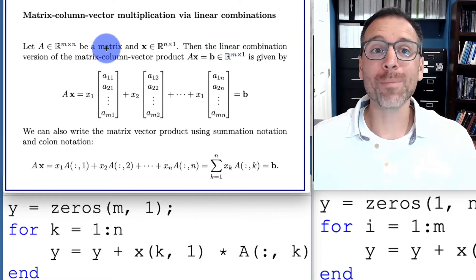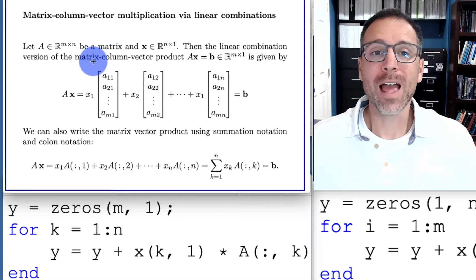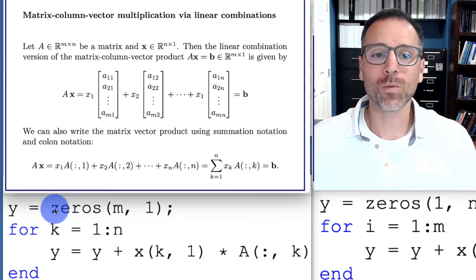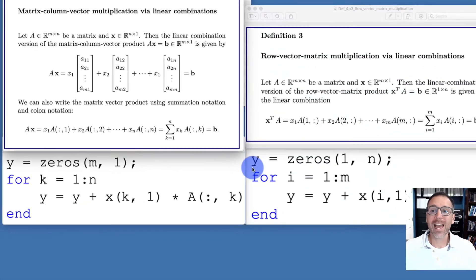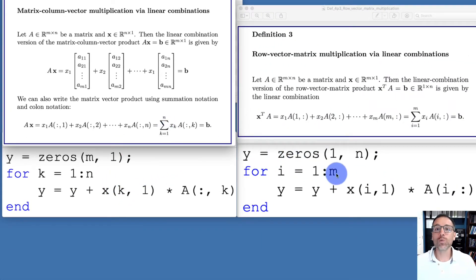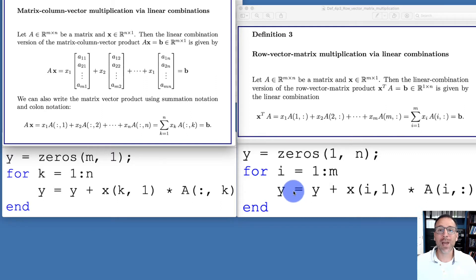Recalling our previous video on matrix column-vector multiplication via linear combinations, we transform the mathematical algorithm into pseudocode: initialize y, then run through the columns doing a linear combination where each loop iteration is an axpy operation. Here we adapt that same approach for the row version — initialize y as a row vector of appropriate form, then loop over the rows of A, performing an axpy operation on each row.